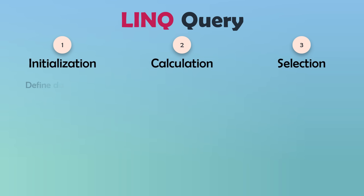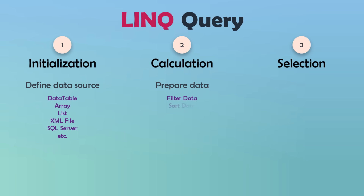Initialization is to define the data source from which we get the data. The data source could be a data table, array, list, XML file, data on SQL Server, or many other data sources. Calculation is the part where we filter the data, sort the data, or do many other operations. Selection is to select the data after doing the steps before. We can select only one element or a group of elements. These are the standard parts of a LINQ query, but they must not always all be set.